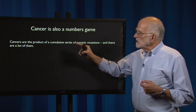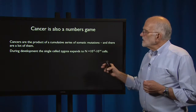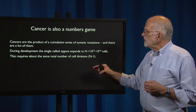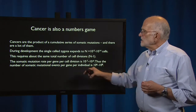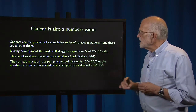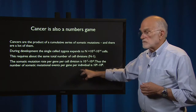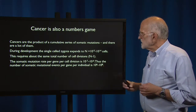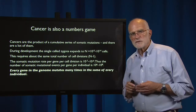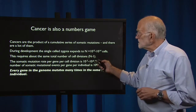Cancers result when a series of somatic mutations accumulate, and there are a lot of somatic mutations. During development, the single-cell zygote expands to about 10 to the 13th to 10 to the 14th cells, requiring about the same total number of cell divisions. The somatic mutation rate per gene per cell division is about 10 to the minus 7th or 10 to the minus 6th. Putting those numbers together, the total somatic mutation events per gene per individual is about 10 to the 6th to 10 to the 8th. Every gene in the genome mutates many times in the soma of every individual — a rather frightening conclusion that comes inevitably from some pretty simple arithmetic.